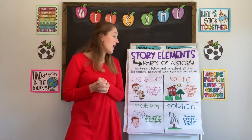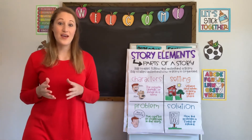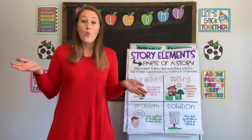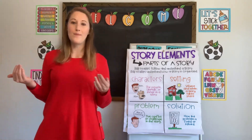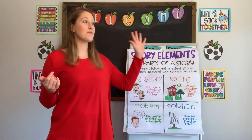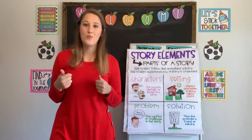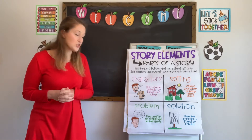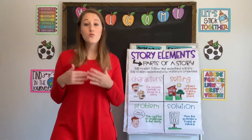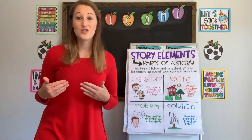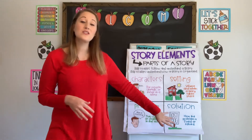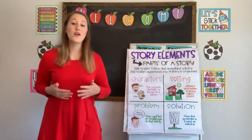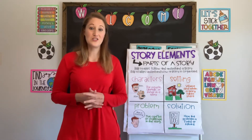Then we have our setting — where and when a story takes place. There are always two parts: where is it happening and when. Some stories happen in the past, some in the future, and some in the present. Next, we have the problem — the conflict or challenges in the story, something that's gone wrong that our character is going to try and solve. And that brings us to our solution: how the problem is fixed or solved.